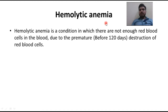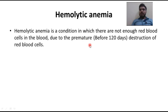Red blood cells are formed in our bone marrow, in soft tissues, through hematopoietic stem cells. This hematopoietic process produces blood cells. Our kidney releases a hormone called erythropoietin, which is the process by which our body synthesizes red blood cells. This is our bone marrow layer of blood cell production.